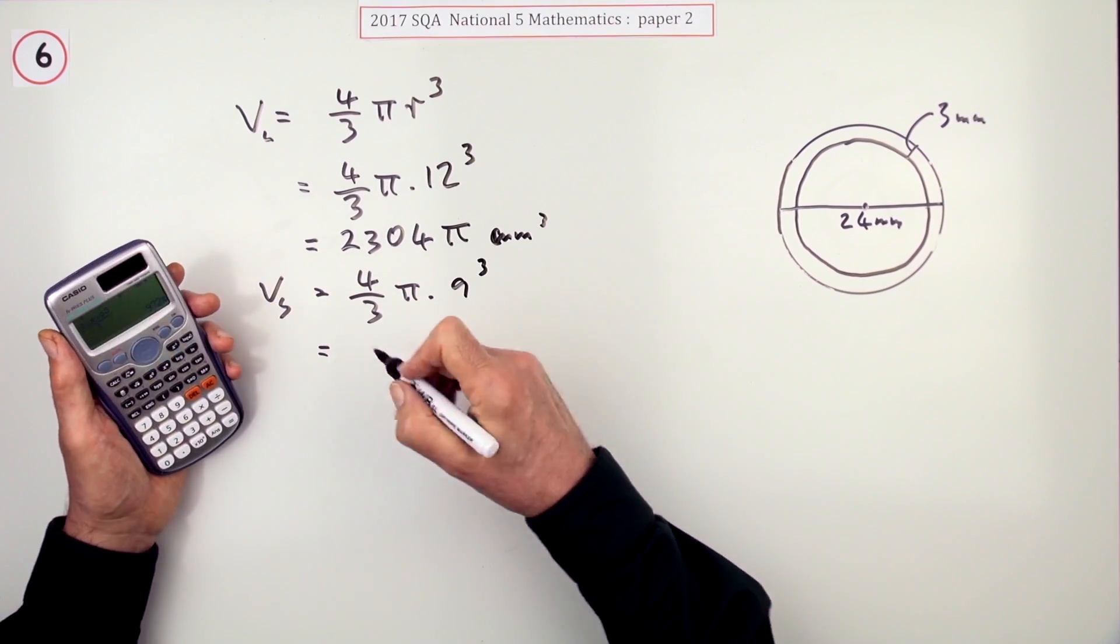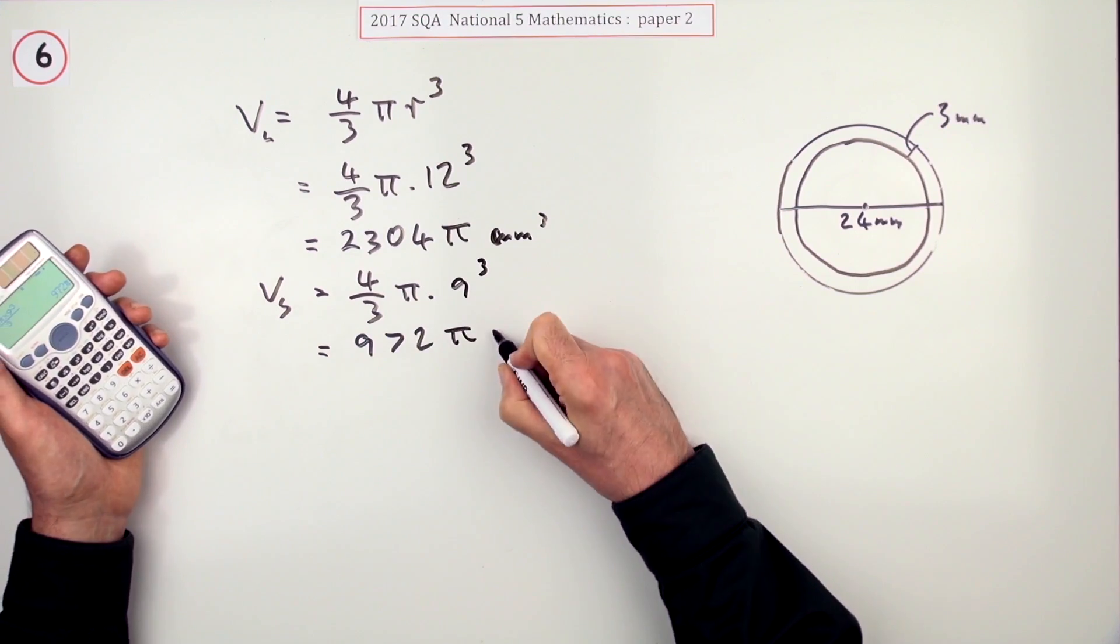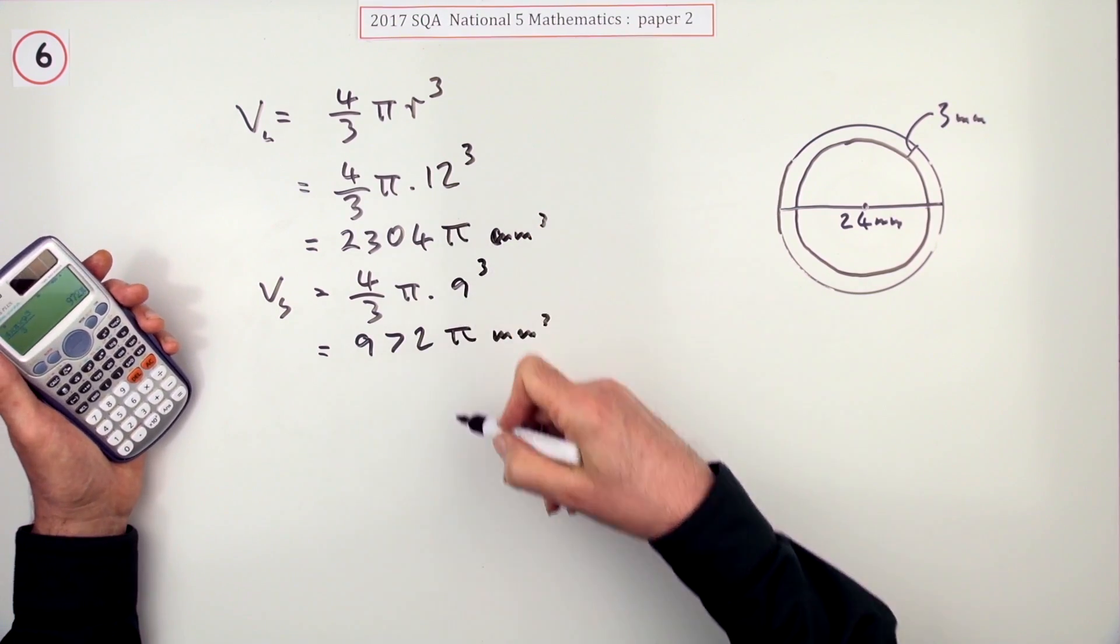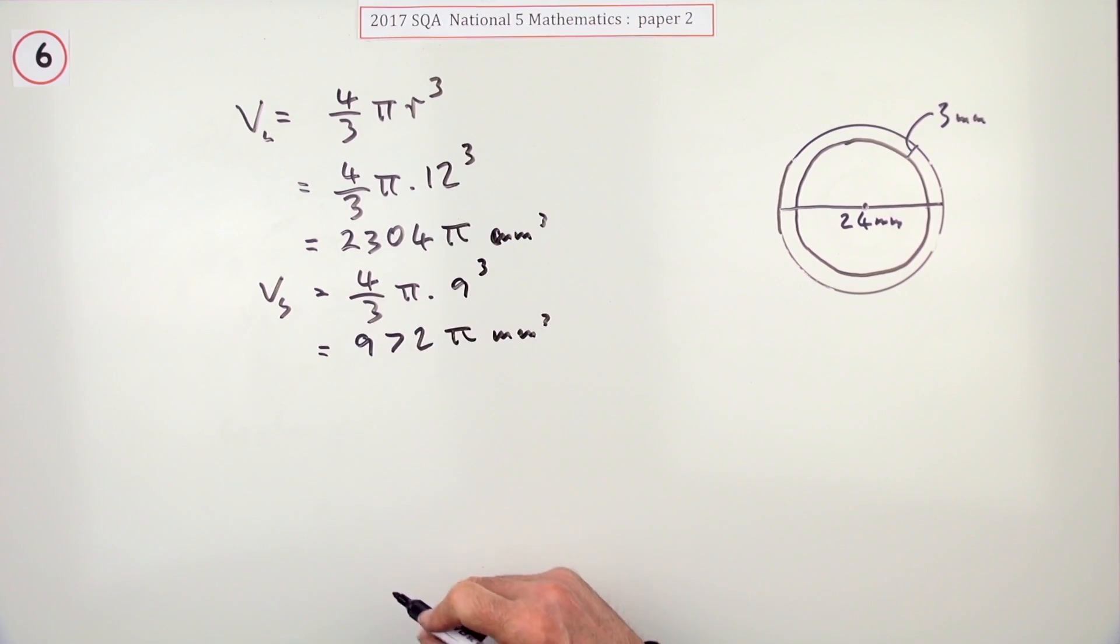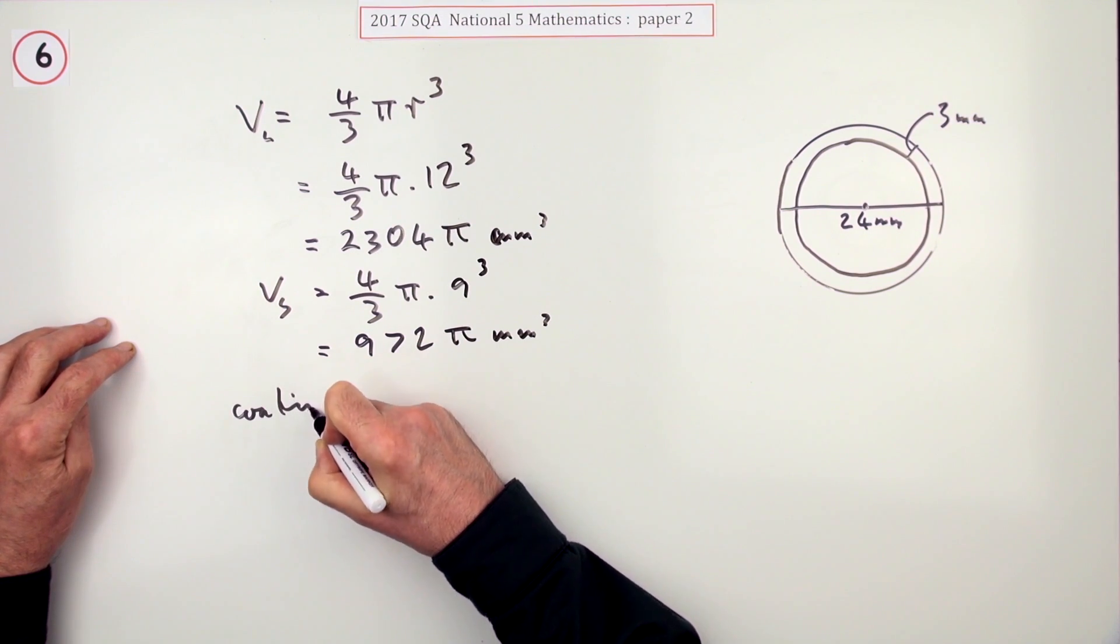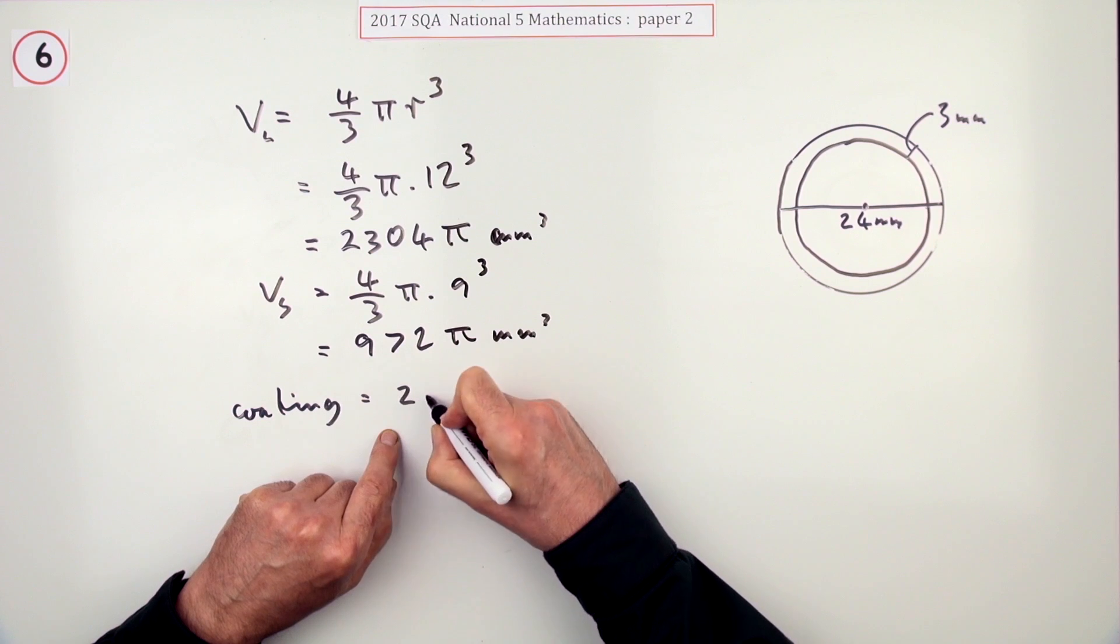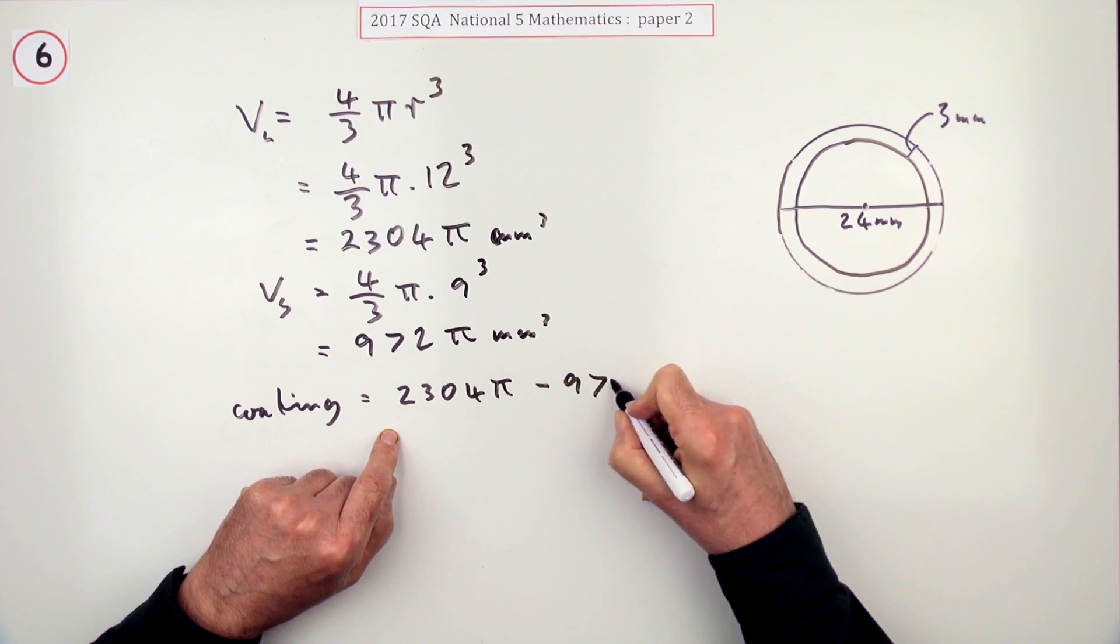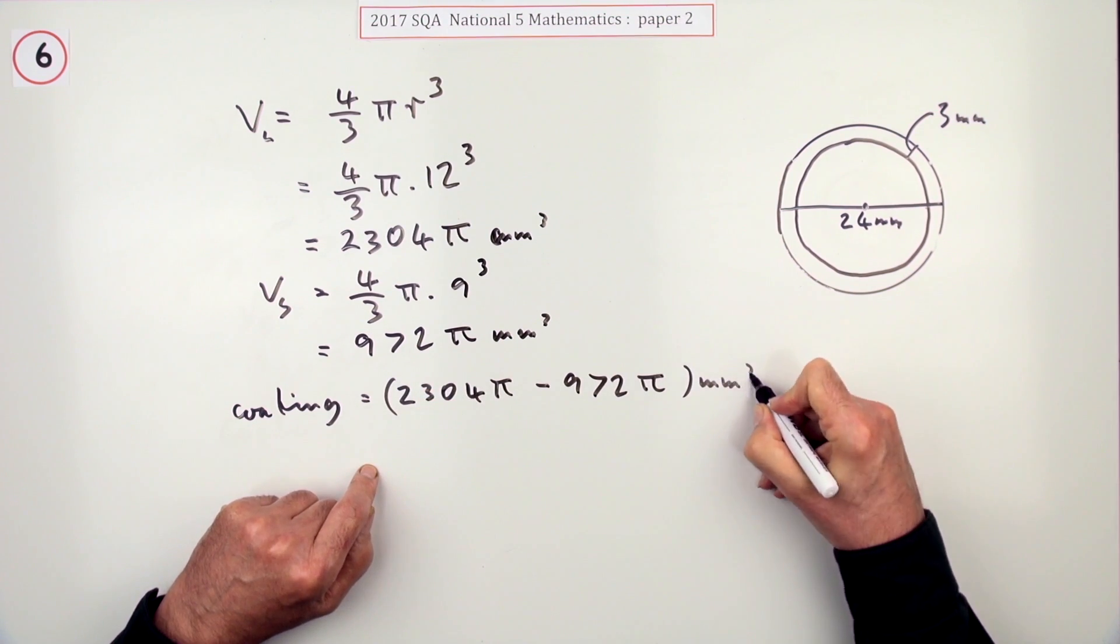And you press the button and I'll just leave it as 972π mm³. It saves any anguish over rounding off those answers because those answers weren't required. So now when it comes to the coating, the coating is going to be the difference between them: 2304π - 972π mm³.